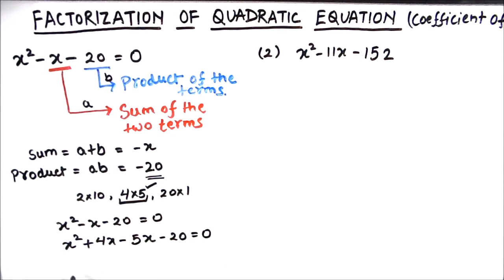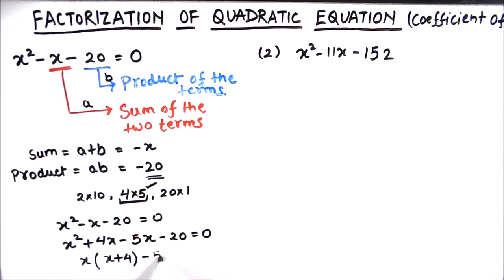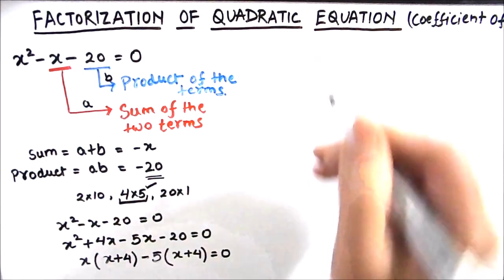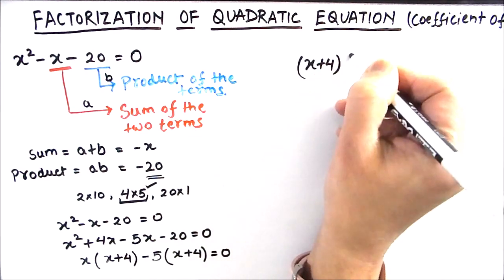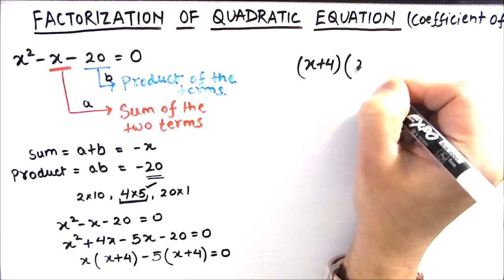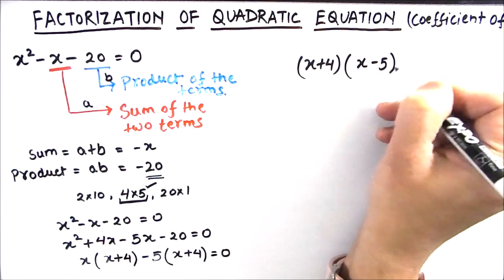Now we can further solve for finding the roots of the equation. From the two terms x squared and 4x, we can take out x as common, giving us x plus 4. And from minus 5x and minus 20, we can take minus 5 as common, giving us x plus 4 in the parenthesis. Now we will take x plus 4 as common, and inside the second bracket we will have x minus 5, which is equal to 0.